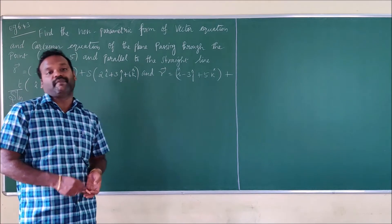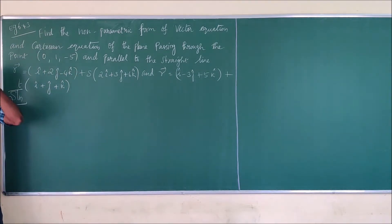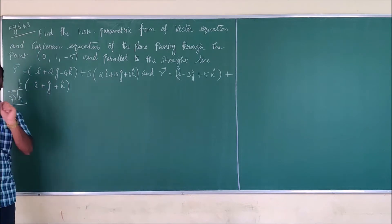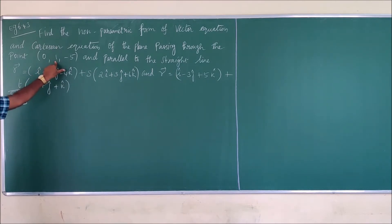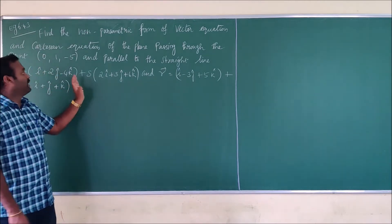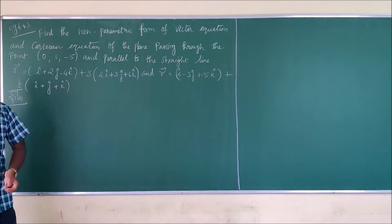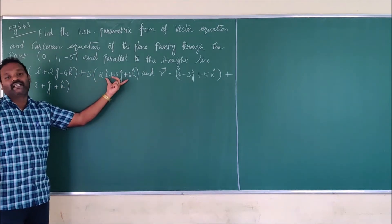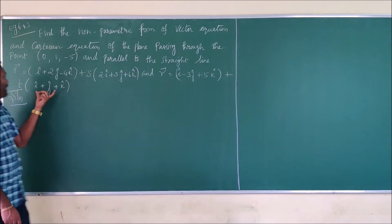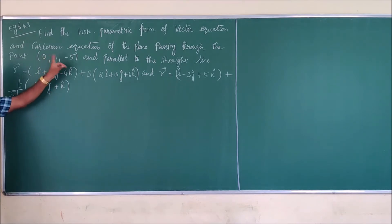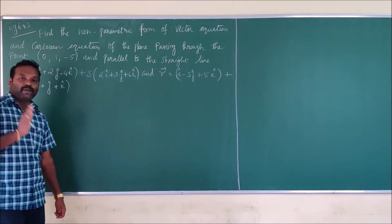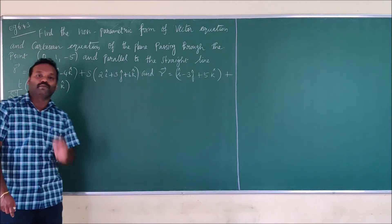You have to remember three types of equations based on the given information. As per the given problem, you are given with one point. When given one point, you should have two parallel vectors. Those parallel vectors are taken from the two lines given. The first parallel vector is from the first line and the second parallel vector is from the second line. So the problem comes under one point and two parallel vectors — that is, the equation of a plane passing through a point and parallel to two given vectors.